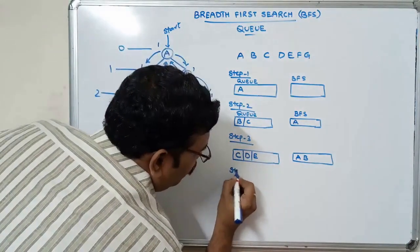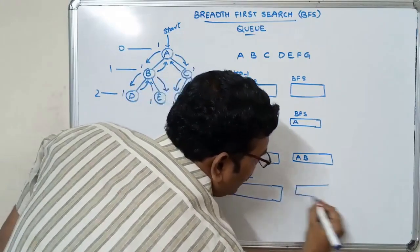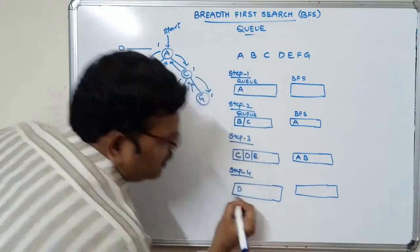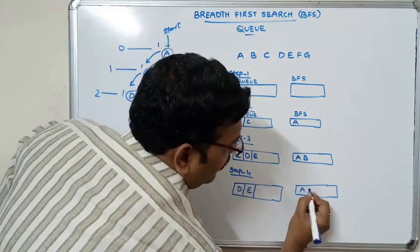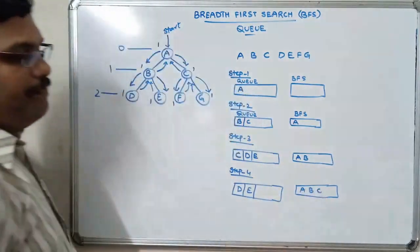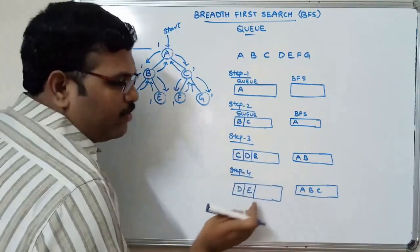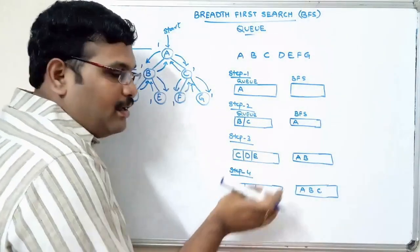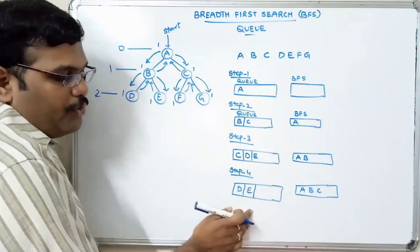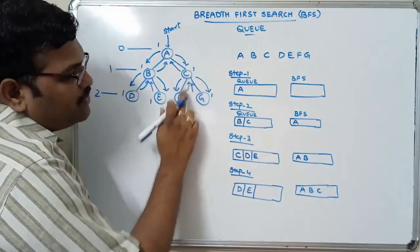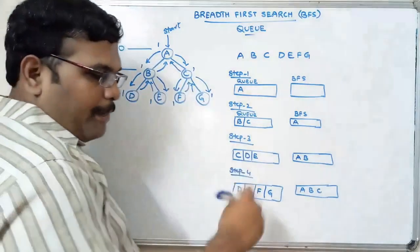Step four: remove the element from the queue. C is removed from the front end. BFS is now A, B, C. Now place the adjacent nodes of C into the queue. The adjacent nodes of C are F and G. So insert F and G into the queue. Apply the same procedure.